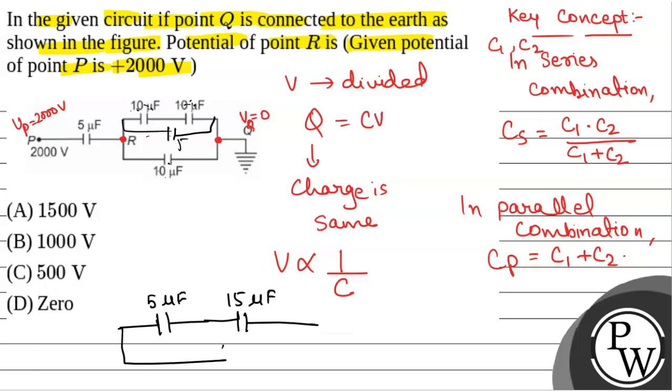So these are two capacitors and the potential difference is 2000 volt, with voltage at point P equal to 2000 volt and voltage at point Q equal to 0. So this will be the circuit and this point is R.